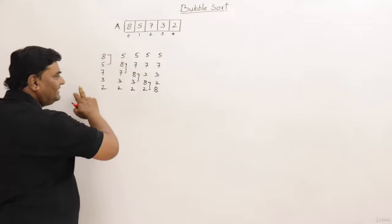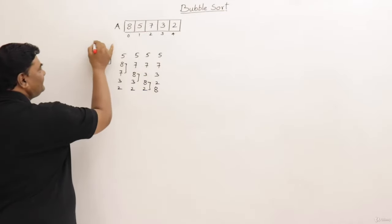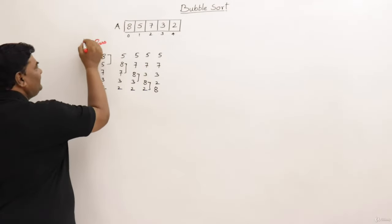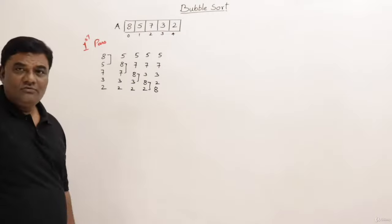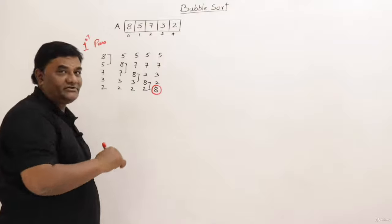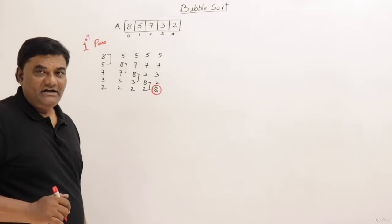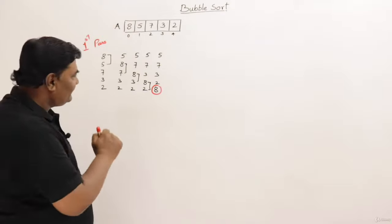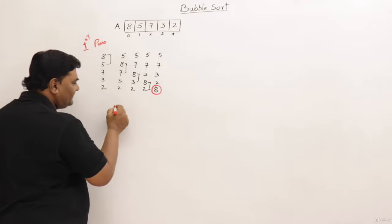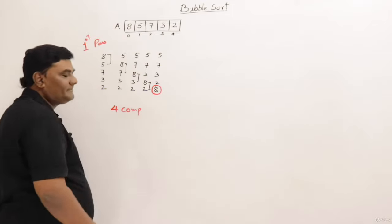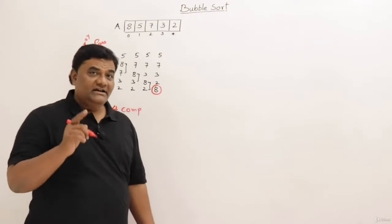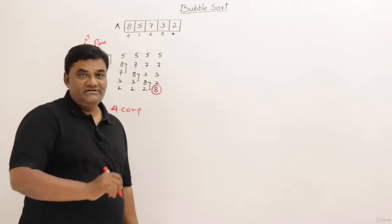When all elements are compared once, this is called a pass — we are going through the list once, so this is the first pass. The result of the first pass is that one element is sorted: the largest element, eight, is now sorted at the bottom. We performed four comparisons, and with n elements we perform n minus one comparisons.